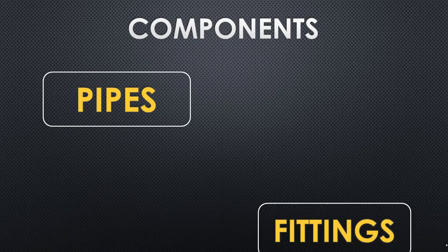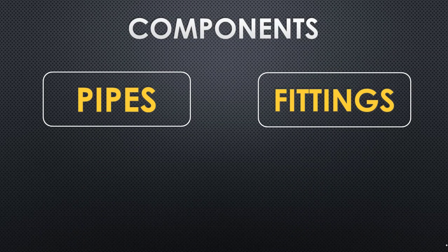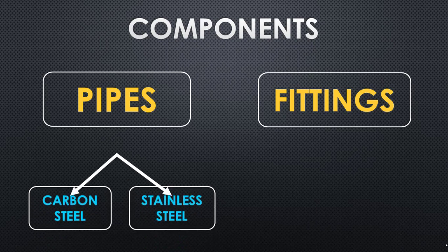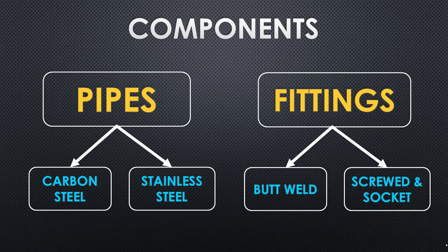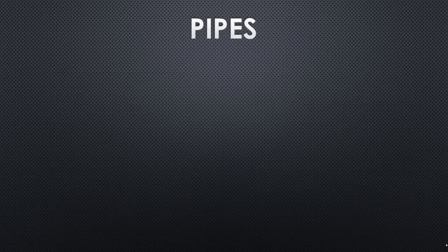Dimensional standards are completely different for pipes and pipe fittings — we can't use the dimensional standards of pipes for pipe fittings. Further, in pipes, you have two more classifications: carbon steel pipes and stainless steel pipes, and both have different standards. Likewise in fittings, you have different types — butt weld and socket and screw type — and both have different standards. Let's start with pipes.